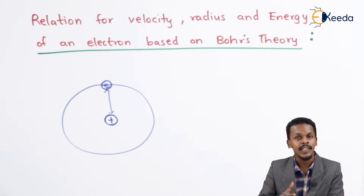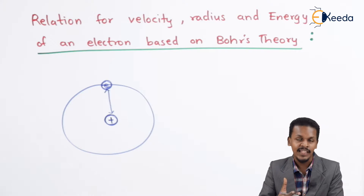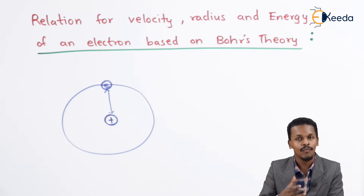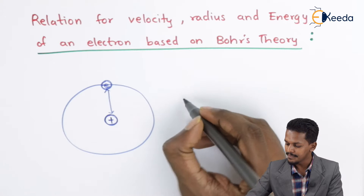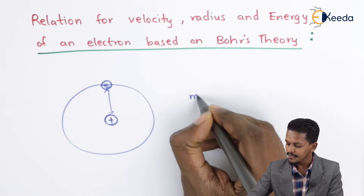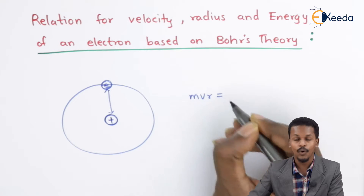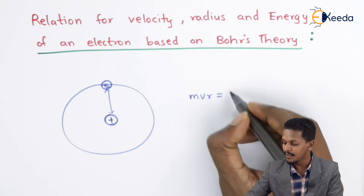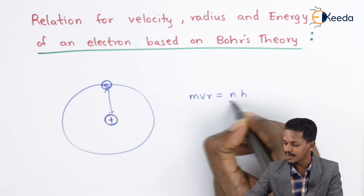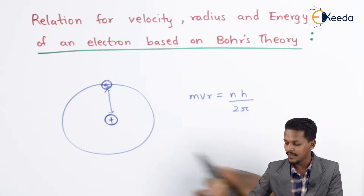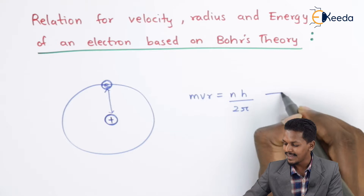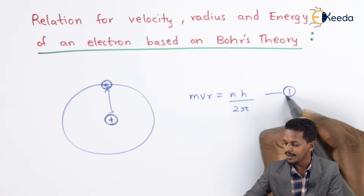Let us understand what we have learned in the previous topics: the angular momentum of a particular electron is MVR, which is found to be an integral multiple of NH divided by 2π. Let us consider this as equation 1.